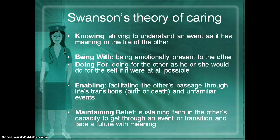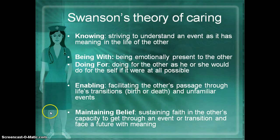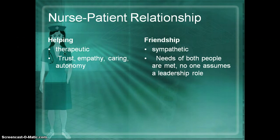Swanson's Theory of Caring on page 82, Table 7-2, talks about knowing — assessing thoroughly that mind, body, and spirit — as well as being with that patient, sometimes in the middle of the night, just being present, doing things for them that they can't do for themselves, and maintaining the belief or hope that they have. Our nurse-patient relationship needs to be one of helping and not friendship.